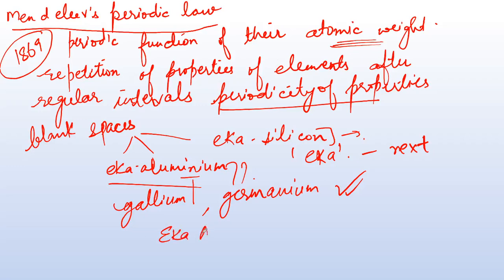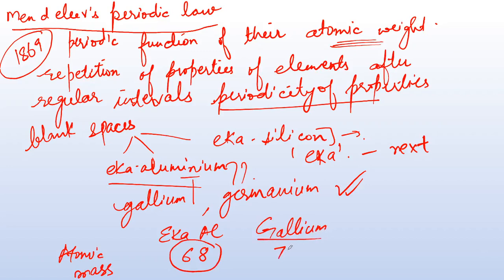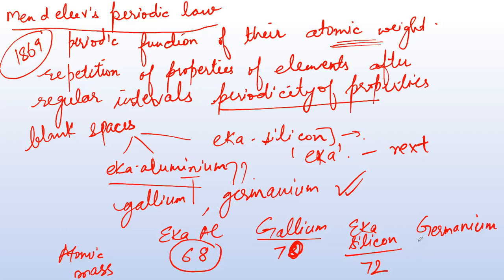Mendeleev was completely right in his predictions. If you look at Eka-Aluminium's predicted properties, the atomic mass was predicted as 68. And indeed, Gallium was later found to have an atomic mass of 70, which is nearly 68. For Eka-Silicon, Mendeleev predicted atomic mass 72, and Germanium's atomic mass is 72.6. The predicted density, melting point, formulae of oxides, and formulae of chlorides were nearly or exactly the same.